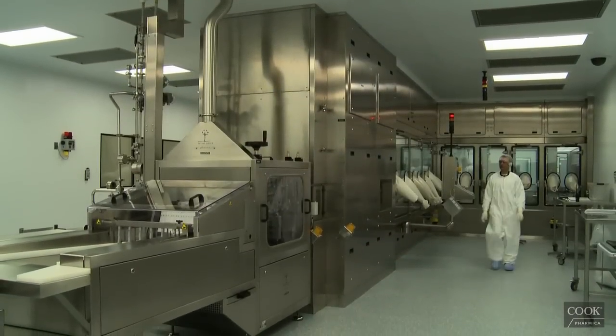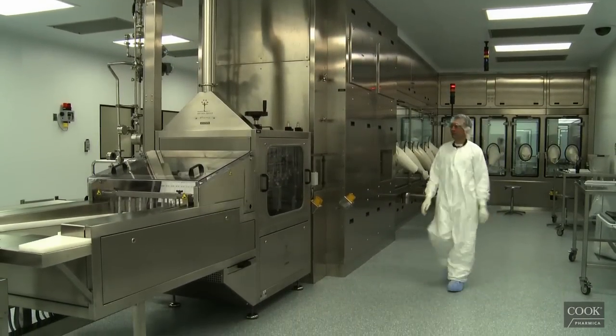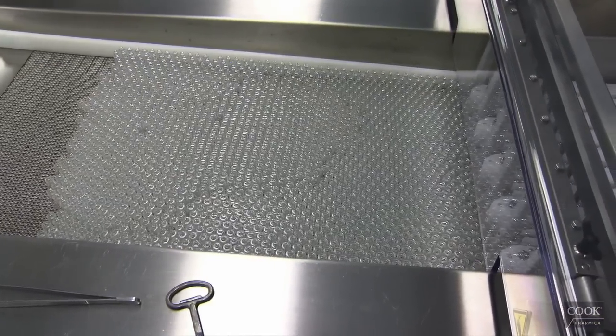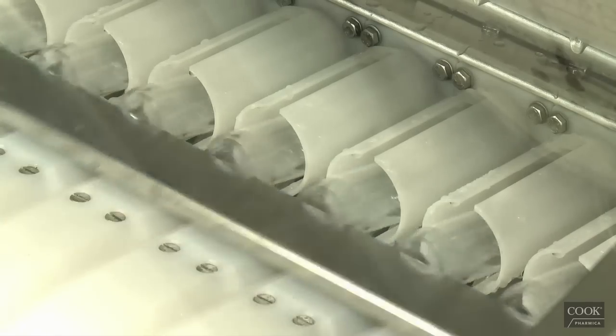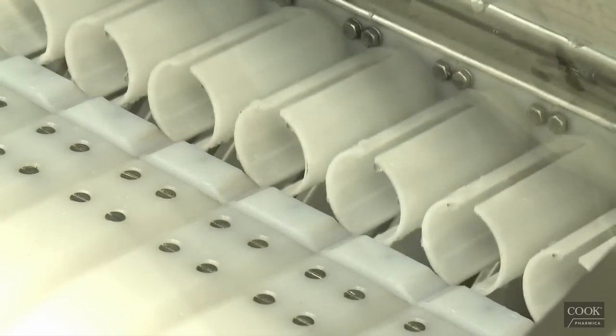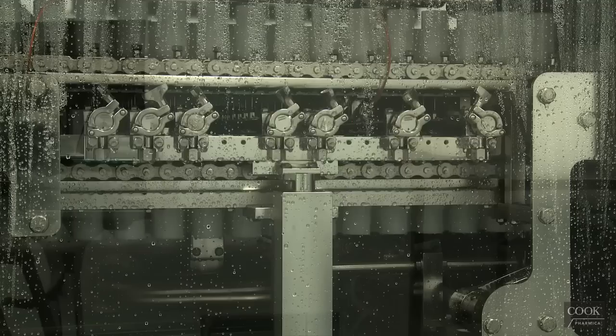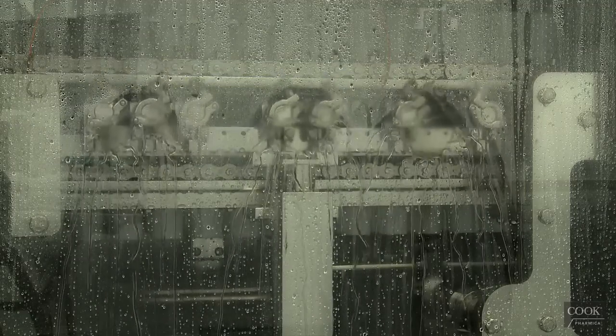The completely automated process starts by using an inline style vial washer. Ranging from 2 to 20 milliliters, up to 50 milliliters with change parts, the interior and exterior are washed and prepared for depyrogenation. The changeover for the vial washer can be completed in less than 15 minutes. It is all part of our turnkey approach that combines precision and efficiency.